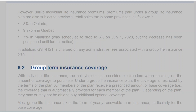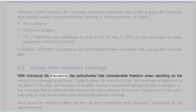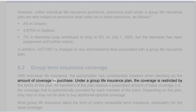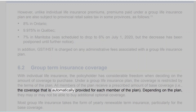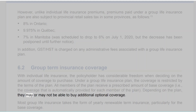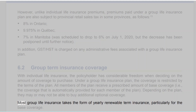6.2 Group Term Insurance Coverage. With individual life insurance, the policyholder has considerable freedom when deciding on the amount of coverage to purchase. Under a group life insurance plan, the coverage is restricted by the terms of the plan. All members of the plan receive a prescribed amount of base coverage automatically provided for each member. Depending on the plan, they may or may not be able to buy additional optional coverage. Most group life insurance takes the form of yearly renewable term insurance, particularly for the base coverage.